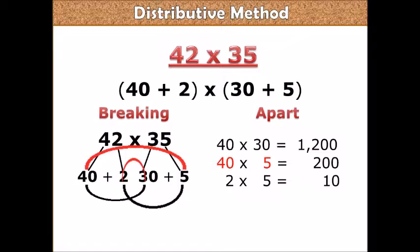Then we have 2 times 30. 2 times 30 is 60. 2 times 3 is 6, then you put the single 0 after the 6 and you get 60.